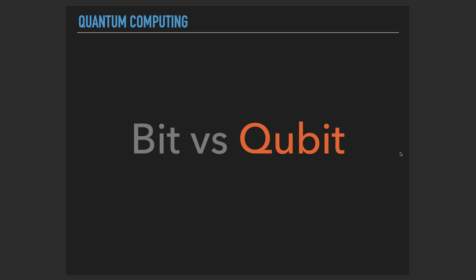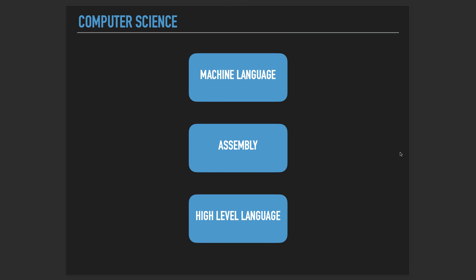So why do classical computers know only about ones and zeros? It started with a very simple idea. We actually have transistors in the processors that can detect whether we have a voltage — whether we have electrons flowing through a current through the transistor — so that we know whether there is electricity or not. If there is a voltage like five volts, then it's an up state, or it's a one. If we don't have it, then it's a zero.